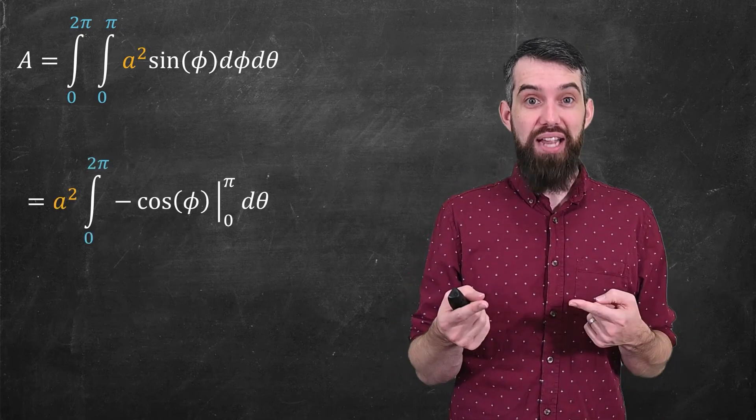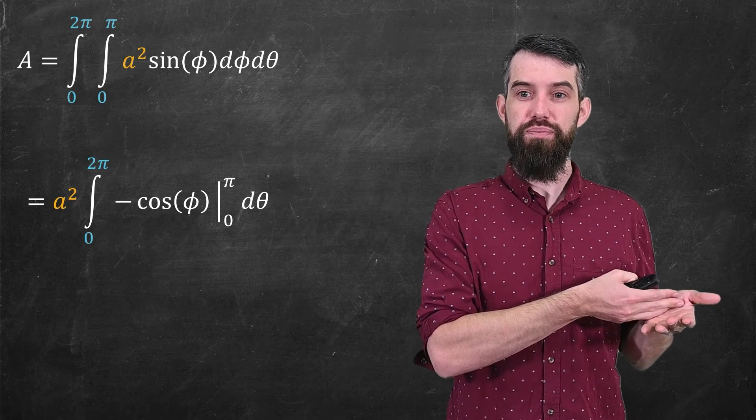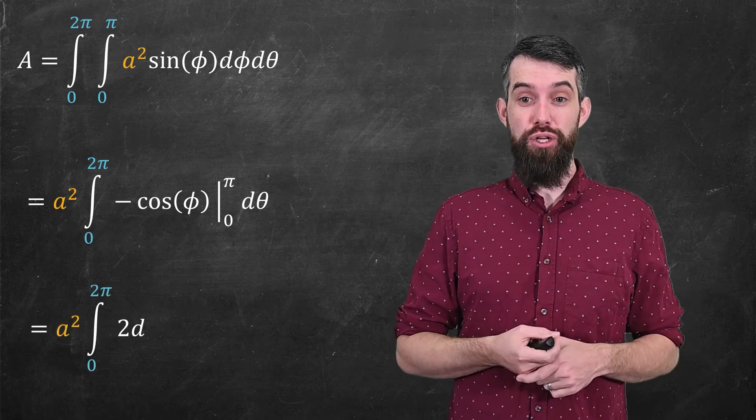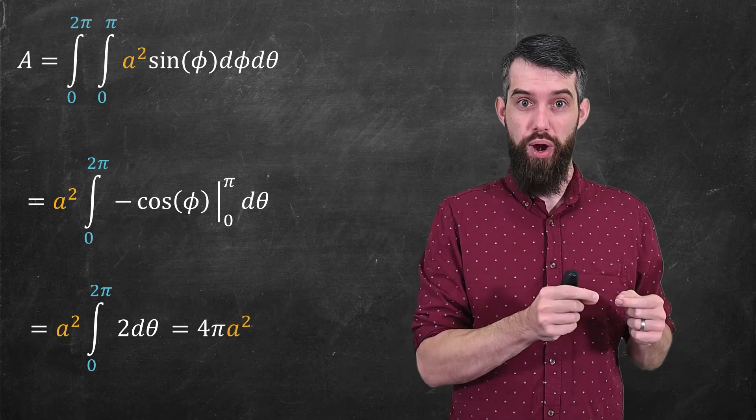So I can integrate out my sine to get a negative cosine between 0 and π, and a² comes out the front. This integrand just evaluates as 2, and then integrating 2 between 0 and 2π is just going to give me 4πa².